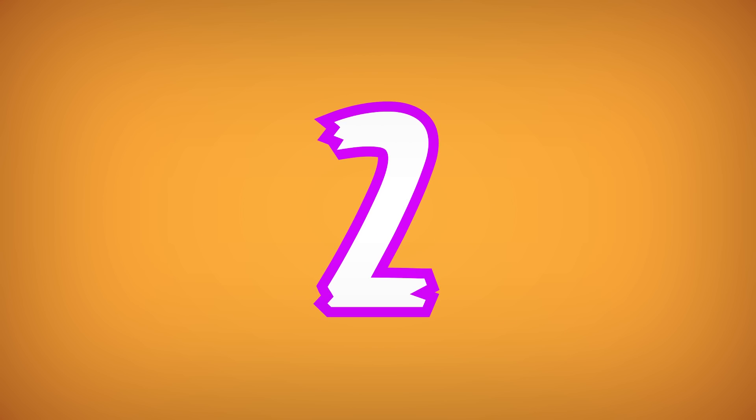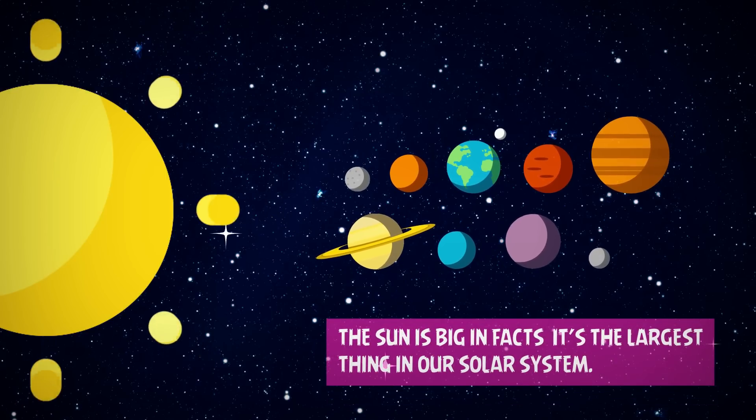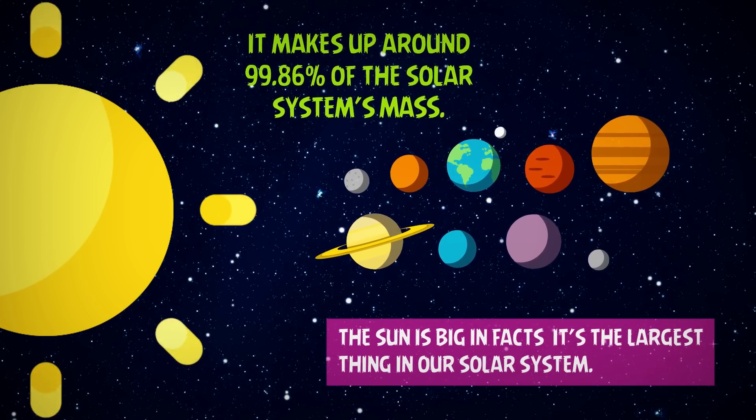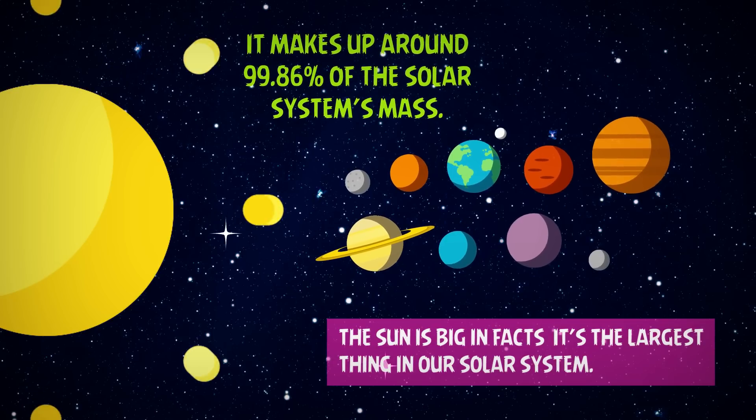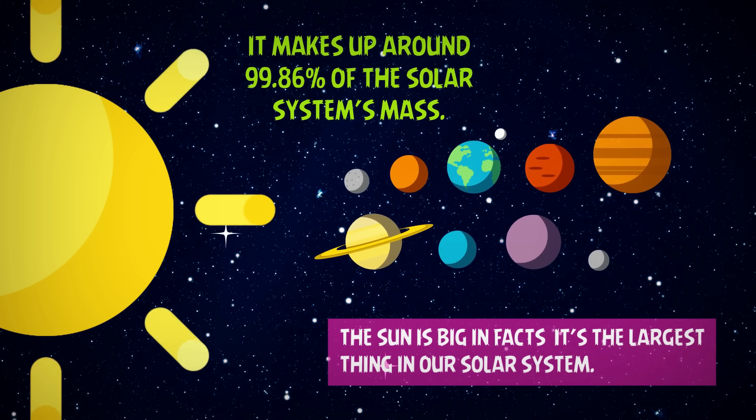Number 2. The sun is big. In fact, it's the largest thing in our solar system. It makes up around 99.86% of the solar system's mass.